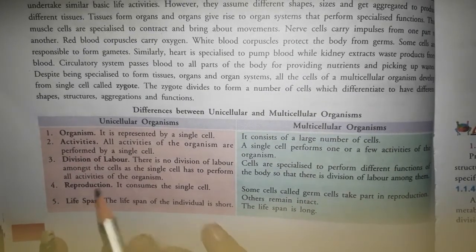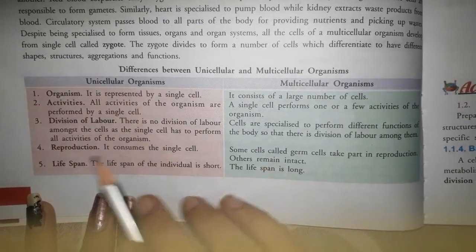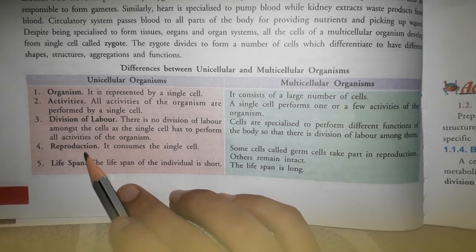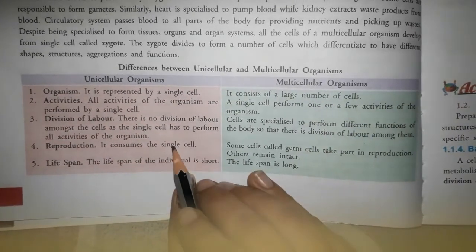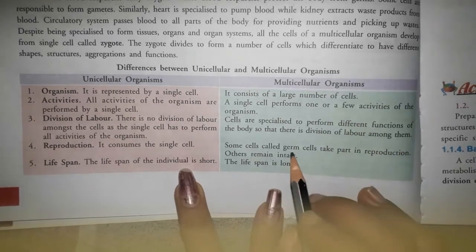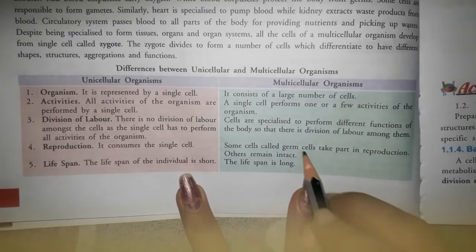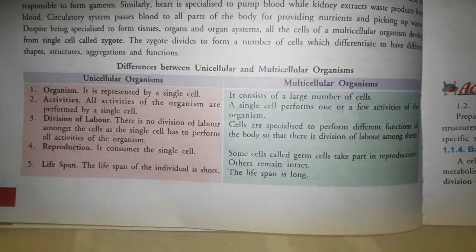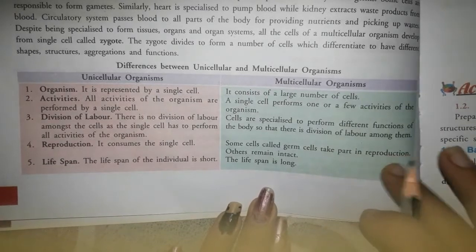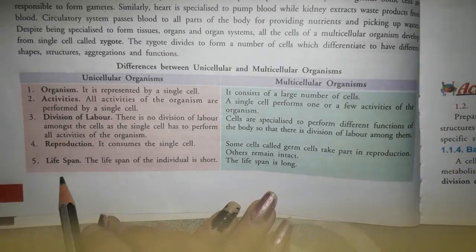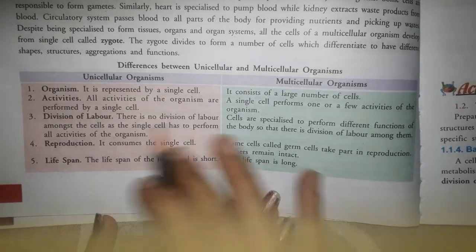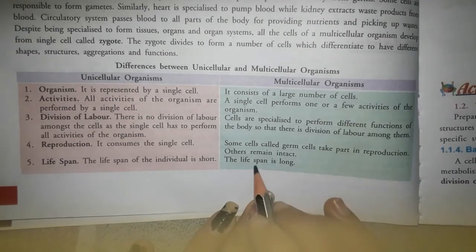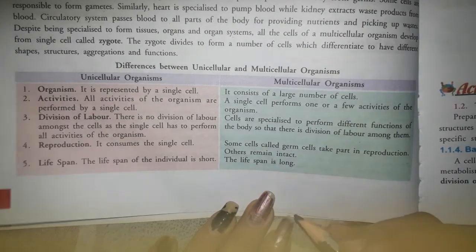Life span और reproduction के बारे में: unicellular organisms का reproduction single cell से ही होता है. जबकि multicellular में कुछ cells जिन्हें germ cells कहते हैं, reproduction process में participate करते हैं. Unicellular organisms का life span काफी small होता है - ये काफी कम time तक ही maintain रह सकते हैं और इसके बाद मर जाते हैं. जबकि multicellular organisms का life span काफी लंबा होता है.